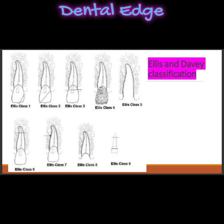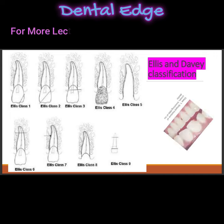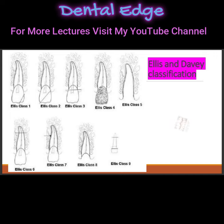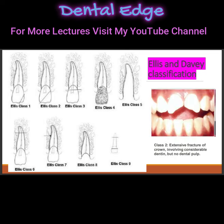Let's see what Ellis and Davie's classification of tooth fracture is. There are nine classes. Class one is when the fracture is a simple fracture of the crown involving little or no dentine, so only enamel is involved. Class two is an extensive fracture of the crown that involves the enamel and dentine but not the pulp.